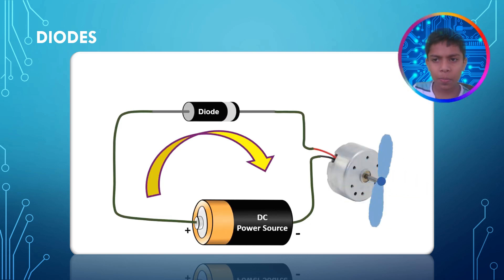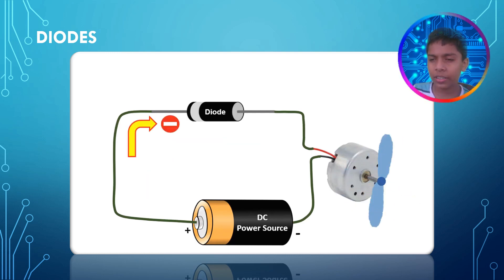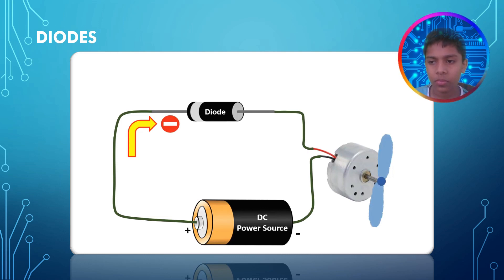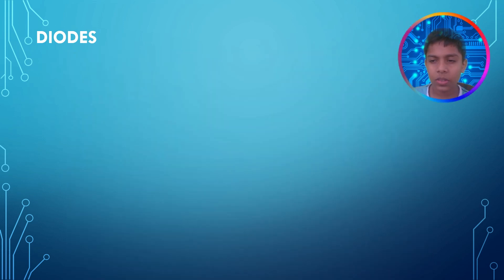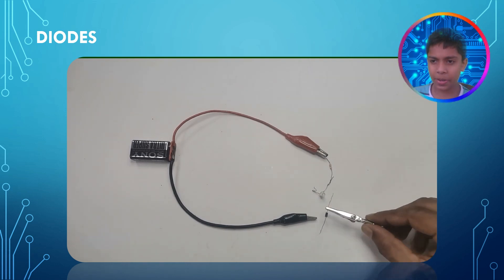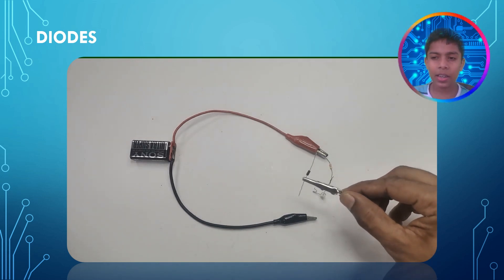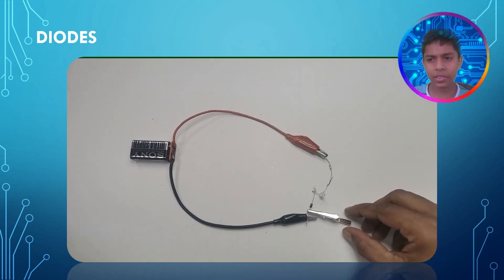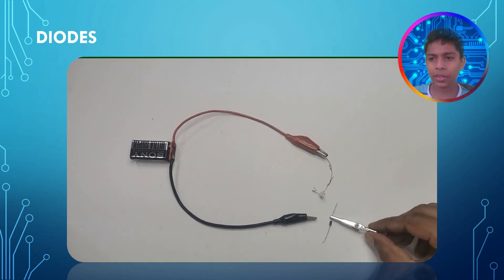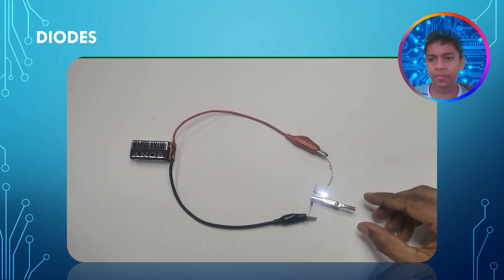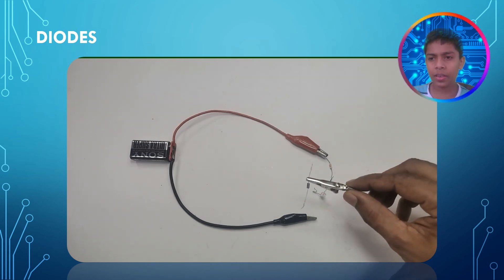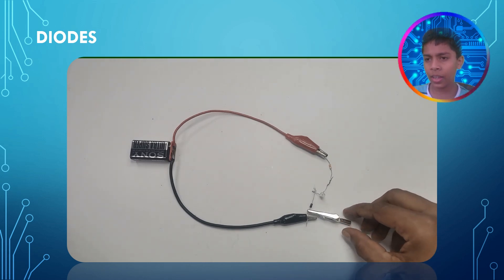Here is a video — when we put the diode correctly the motor spins, and when we change the direction the motor doesn't rotate. That was the animation, and here is a real example. When we put the diode correctly the bulb lights up, and when we change the direction the bulb doesn't light up. Changing the direction of the diode to the other side, the bulb doesn't light up.